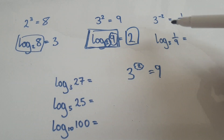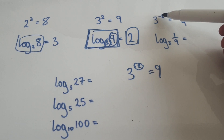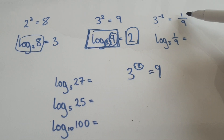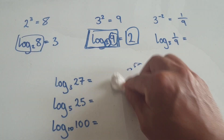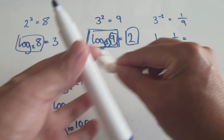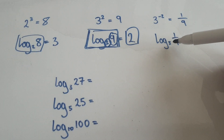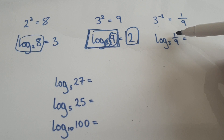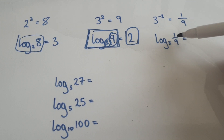Now let's look at this. We know 3 to the power of negative 2 is 1 over 9. So a question will be given to you as: log base 3 of 1 over 9 equals what?